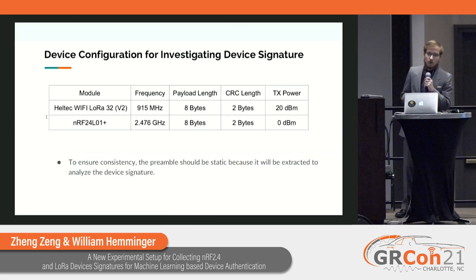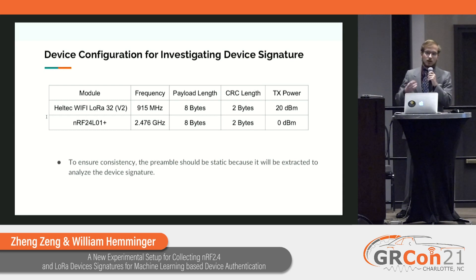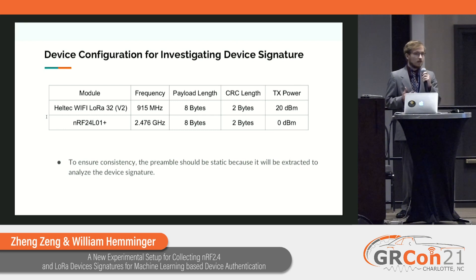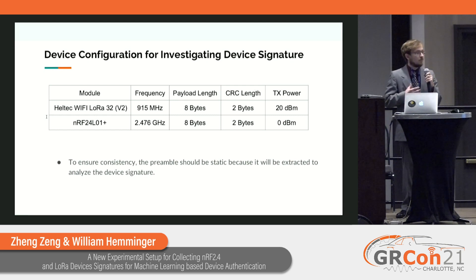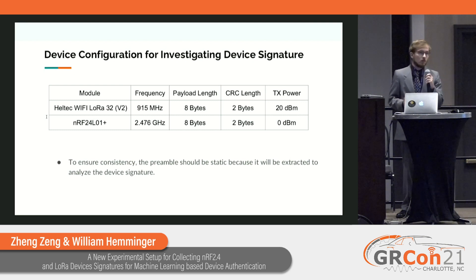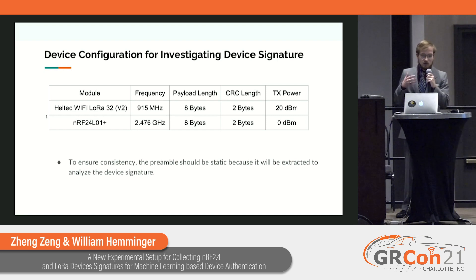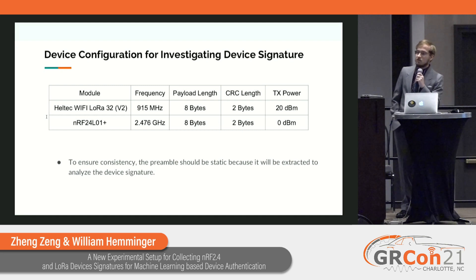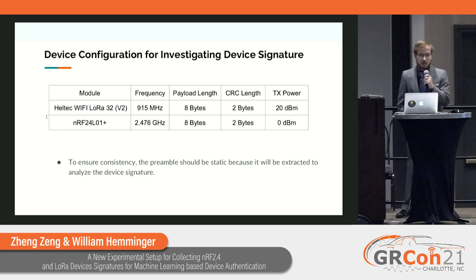Regarding device configurations, we tried to provide optimal communication conditions using the available device settings. For frequencies, we chose those recommended for each respective device. We set transmission power to the maximum possible level — 20 dBm for the LoRa devices and 0 dBm for the NRFs. To ensure consistency, we made sure the preamble is static, because we want to use the preamble for device fingerprinting and analyze that specific segment.